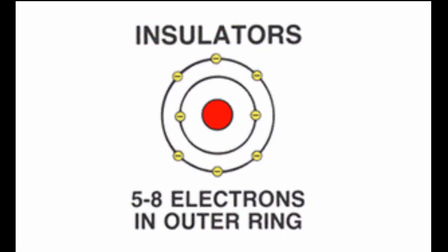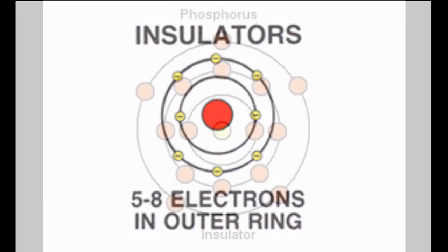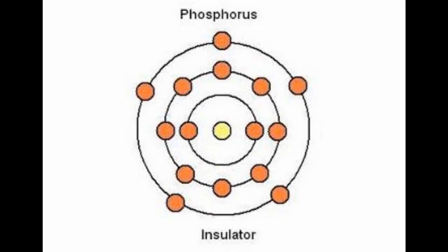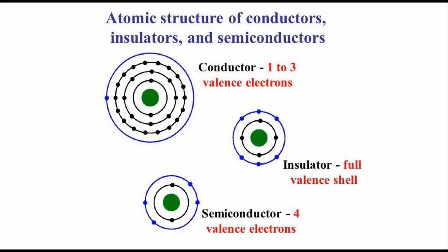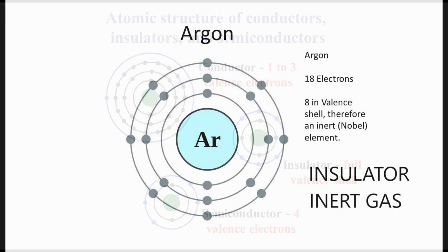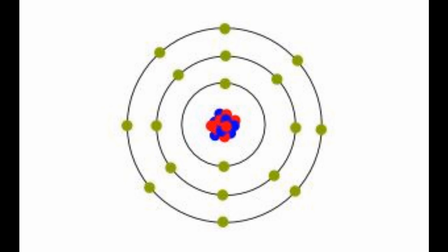Let's talk about insulators. The valence shell of an atom can contain up to eight electrons — if it's completely filled, that atom is an insulator. The conductivity of an atom depends on the number of electrons in the valence shell. When an atom has only one electron in the valence shell, it's almost a perfect conductor. When the atom has eight valence electrons, the outer ring is complete and the atom is an insulator. Therefore, conductivity decreases with an increase in the number of valence electrons.